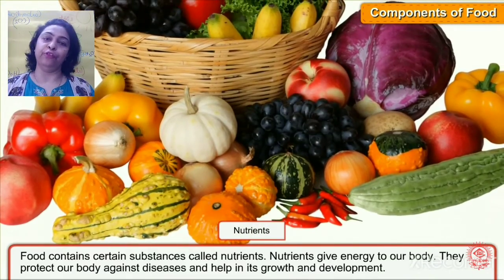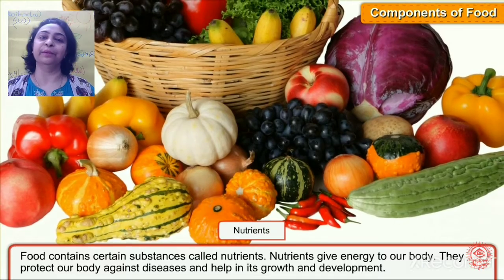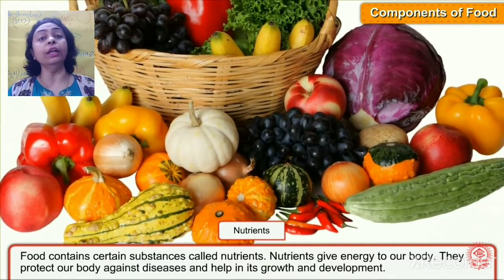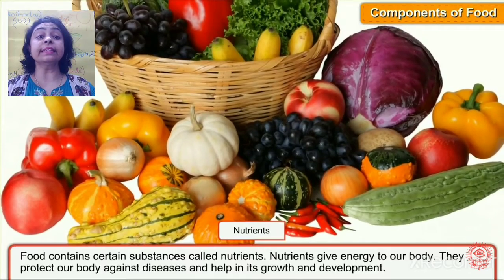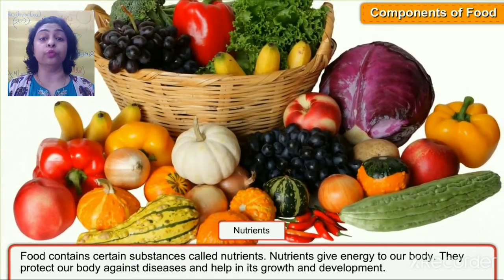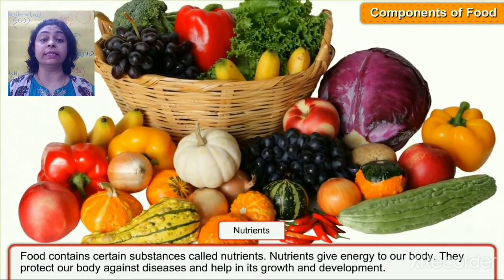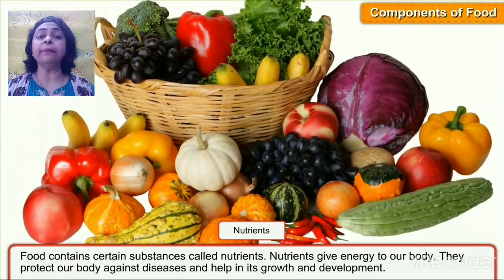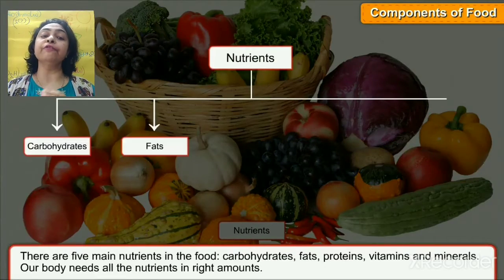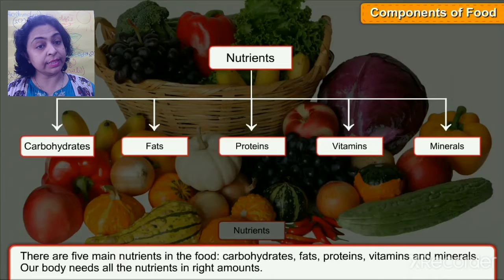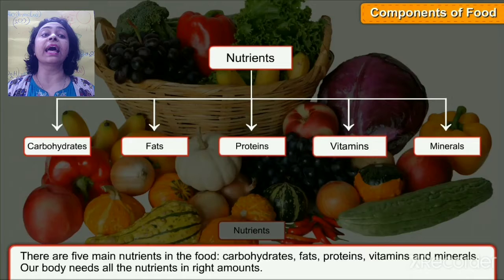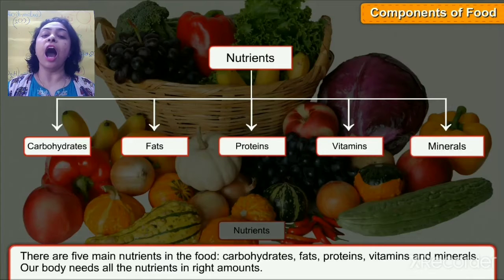Today we will discuss about components of food. Food contains certain substances called nutrients. Nutrients give us energy to grow and to work. They protect our body against diseases and help us in growth and development. There are five main nutrients in food: carbohydrates, fats, proteins, vitamins, and minerals.